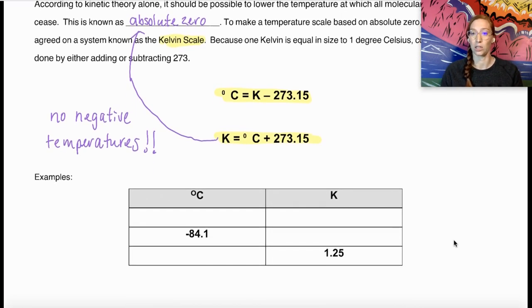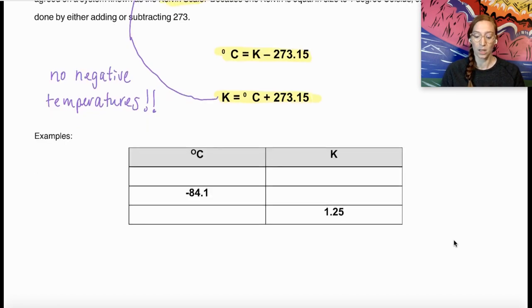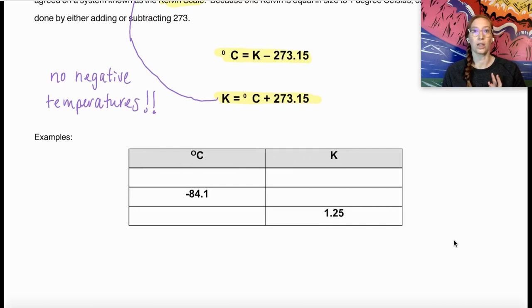Make sure you pay attention to sig figs. We want to round to the least number of decimal places when we add and subtract. I'm going to start out with 22.5 degrees Celsius. This is probably around room temperature, a comfortable room temperature.